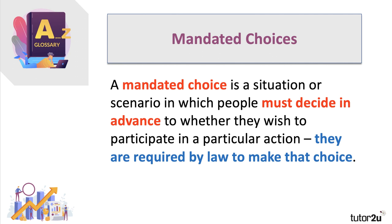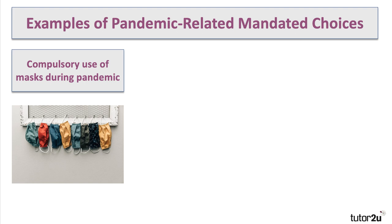Some governments across the world have brought in the form of mandated choice with regard to occupational pensions — employers are required by law to enroll people into a pension scheme. Some governments have mandated retirement ages, although other countries are moving away from that. What about things like mandated online learning for schools closed perhaps by a pandemic or extreme weather? Mandated choice is a variant of default choice except that the choices are mandated through the force of law or statutory regulations.